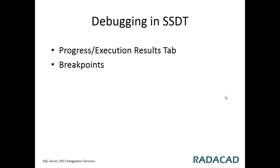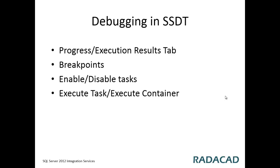Debugging happens in SQL Server Data Tools, your main development environment. There is a Progress or Execution Result tab which shows what happened in the control flow. You can use breakpoints if you're familiar with Visual Studio. You can also enable and disable tasks, and there are windows like Watch, Locals, and Autos which are handy when debugging with breakpoints.